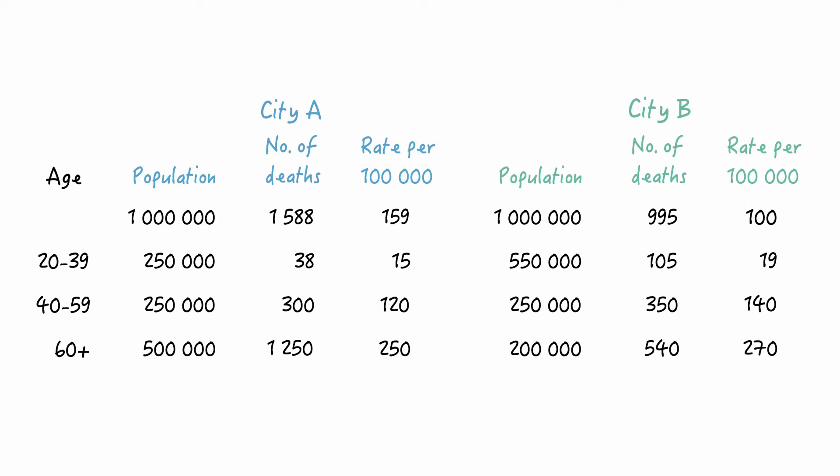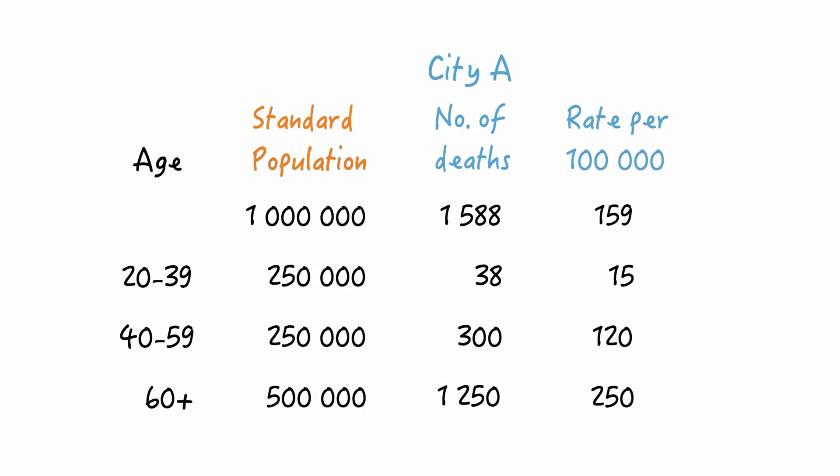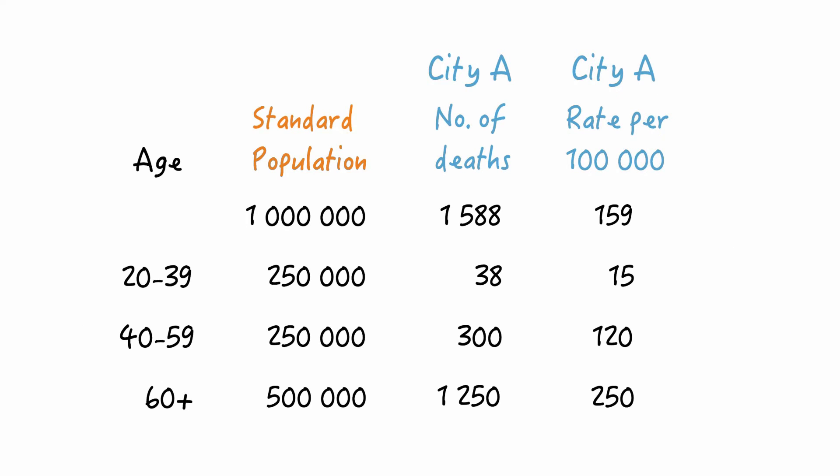Now, in order to arrive at rates that are free from age confounding, we could apply the age-specific death rates to a standard population. We could either create a fictitious one or just use one of the two cities. Let's choose city A as our standard population. This is the age distribution, these are the numbers of deaths, and this was our death rate in city A.